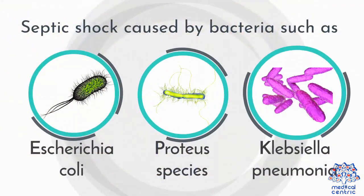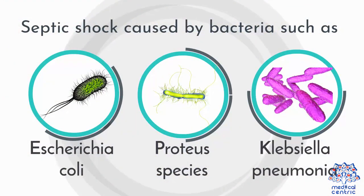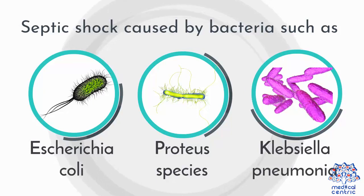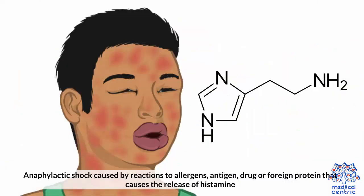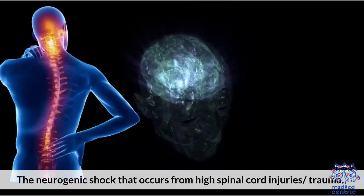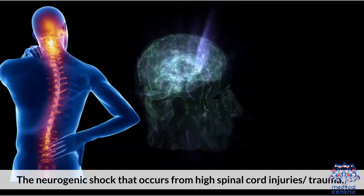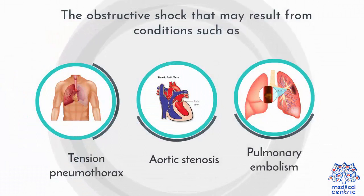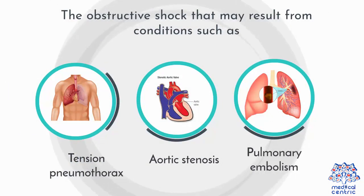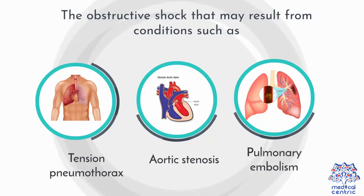Distributive shock may include septic shock caused by bacteria such as Escherichia coli, Proteus species, and Klebsiella pneumoniae. Anaphylactic shock is caused by reactions to allergens, antigens, drugs, or foreign proteins that cause the release of histamine. Neurogenic shock occurs from high spinal cord injuries or trauma. Obstructive shock may result from conditions such as tension pneumothorax, aortic stenosis, and pulmonary embolism.